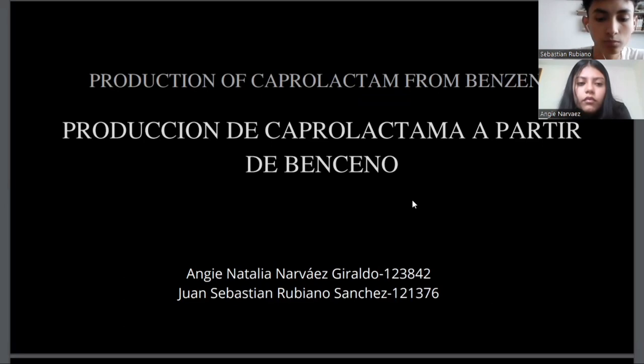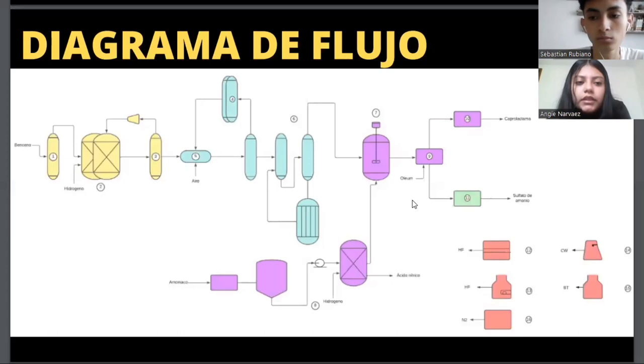Caprolactam production involves four major sections: 1. Benzene Hydrogenation, 2. Cyclohexane Oxidation, 3. Oximation and Beckmann Rearrangement, and 4. Ammonium Sulfate Purification.